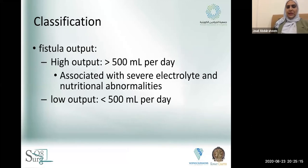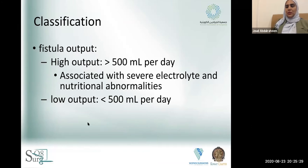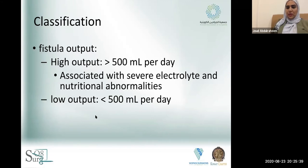We can classify fistula according to output. High output is usually more than 500 ml per day and is associated with severe electrolyte and nutritional abnormalities. Low output is usually less than 500 ml per day, and low-output fistulas have a better chance of spontaneously closing or healing.